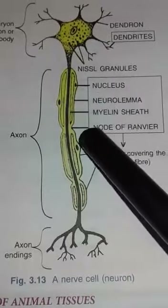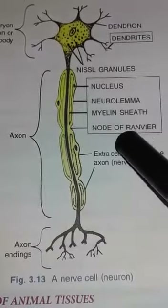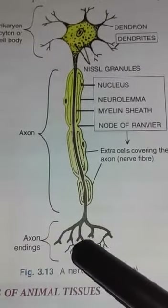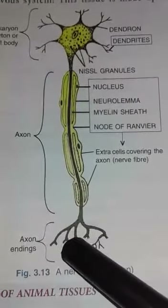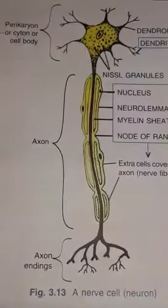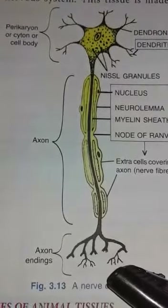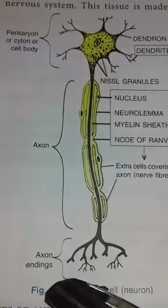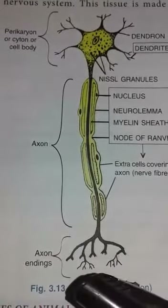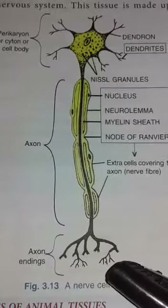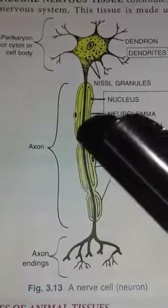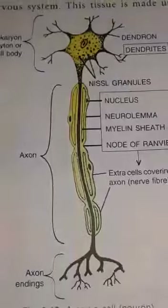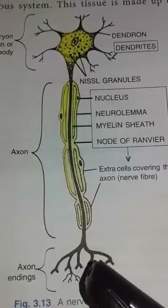Where the myelin sheath is not present, the term used is Nodes of Ranvier. The outer cell covering over the nerve fiber is the axon ending, also known as the terminal ending of the nerve cell. At this point, the next nerve cell starts. Between two nerve cells there is a gap called the synaptic cleft or synapse. The synapse is the meeting point or junction of two nerve cells where the exchange of messages from one nerve cell to another takes place, with the help of a chemical called a neurotransmitter.